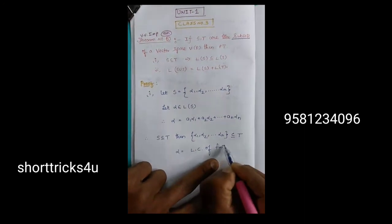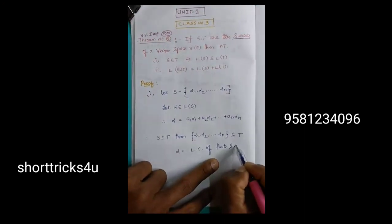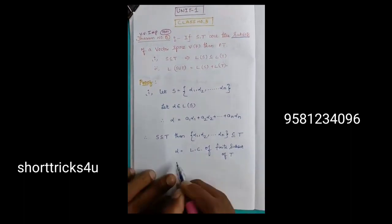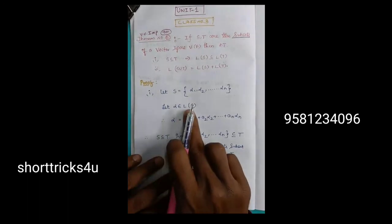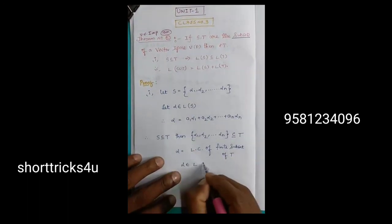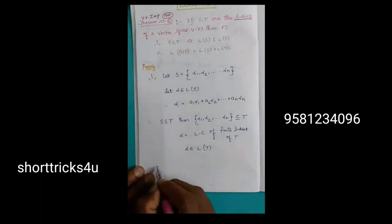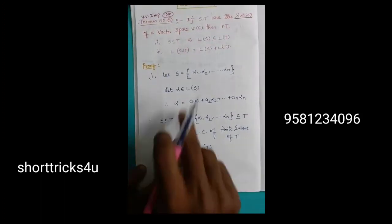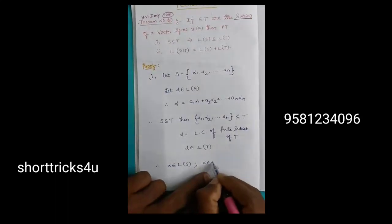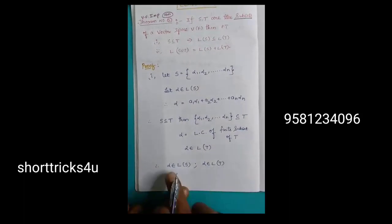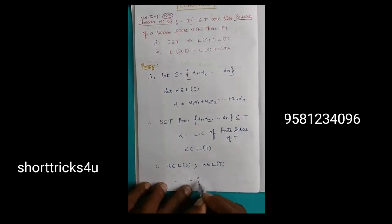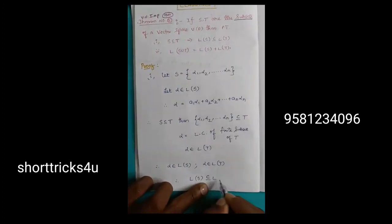Linear combination of a finite subset of T. If you have a linear combination, automatically the linear span follows — then linear combination means linear span. So alpha belongs to L of S also belongs to L of T. Therefore L of S is contained in L of T.